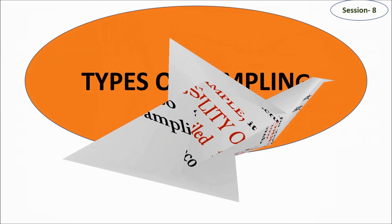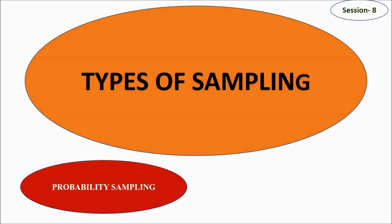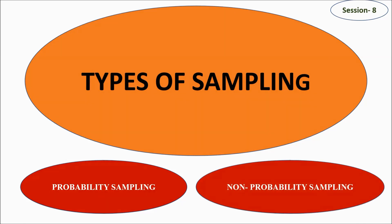There are two major types of sampling: probability sampling and non-probability sampling. As the name suggests, one is based on the probability of estimation — how probable the result is. The other is non-probability, which is not based on the chances of occurrence. These are the two major segments of types of sampling, and we will look at each one by one.